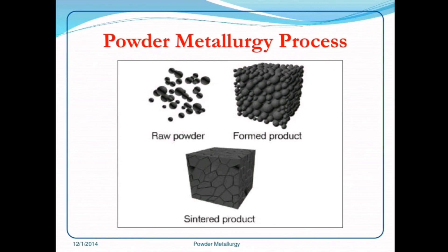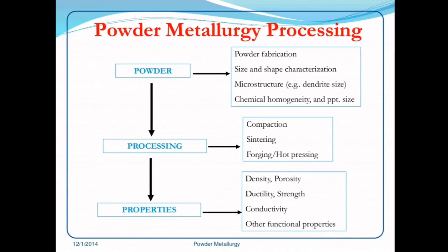The powder metallurgy process diagram shows a raw powder which is compacted into a formed product and then sintered to make a solid block of metal. Powder metallurgy processing steps include: powder fabrication, size and shape characterization, microstructure (e.g., dendritic size), chemical homogeneity, and precipitate size. Processing involves compaction, sintering, forging or hot pressing. Properties assessed include density, porosity, ductility, strength, conductivity, and other functional properties.